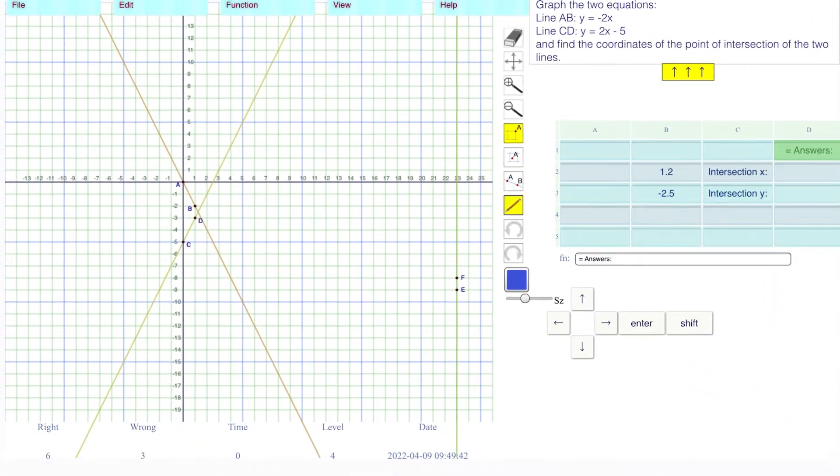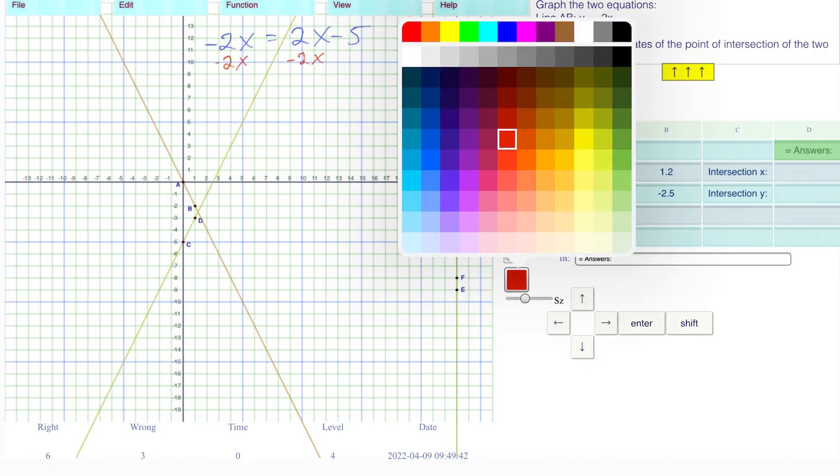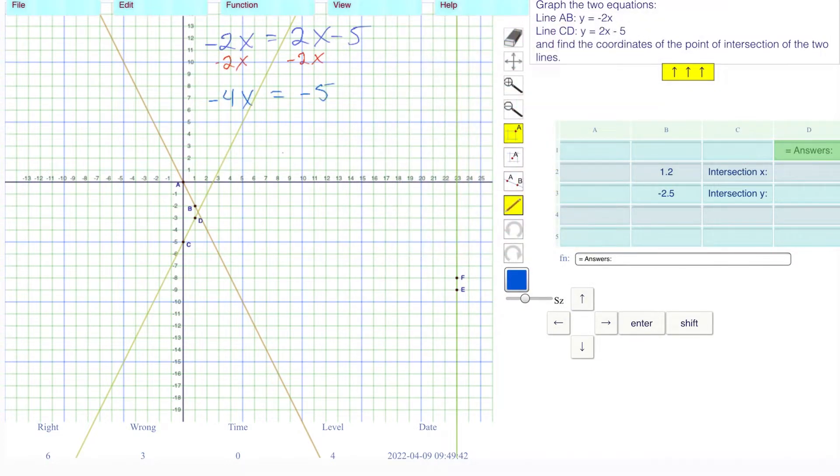We have these two equations. Negative 2x is equal to 2x minus 5. I have x's alone on the left-hand side. It's going to be slightly easier just to subtract 2x's from both sides.